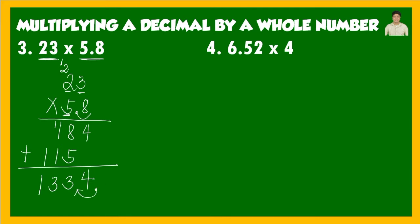Our final answer is 133.4 or 133 and 4 tenths. Next, example 4: 6 and 52 hundredths times 4. Since our decimal number has 2 decimal places, we will move 2 decimal places to the left in our answer.